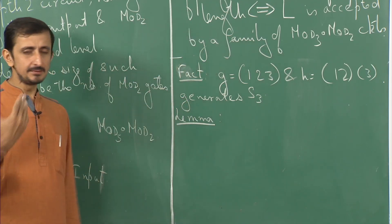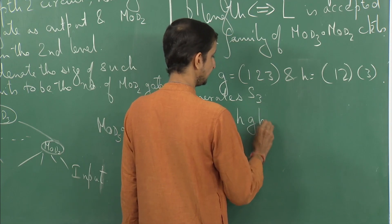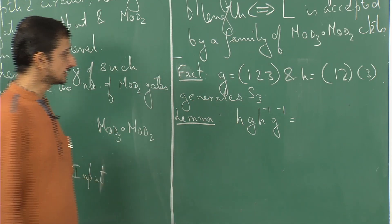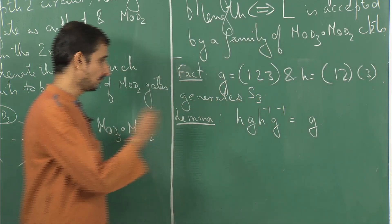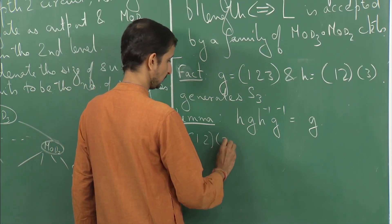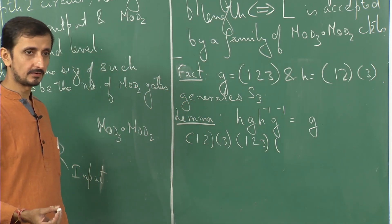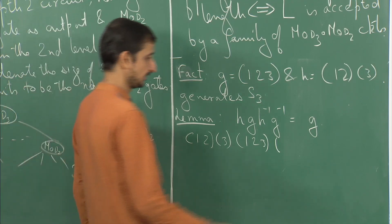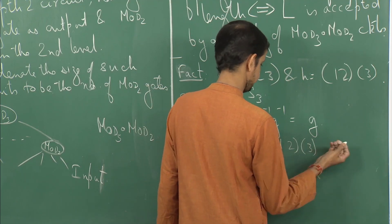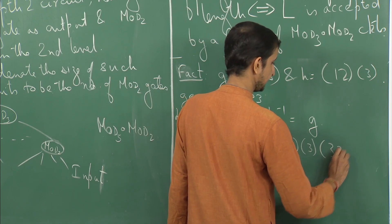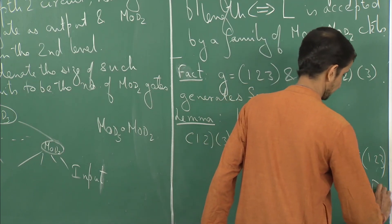We can say something similar to what we said last time. If we look at the commutator h·g·h⁻¹·g⁻¹, this turns out to be g. It is easy to check: h inverse is h itself because 1 maps to 2 and 2 maps back to 1, so h is its own inverse. And g inverse is basically (3,2,1). If you solve this, you get the cyclic permutation g again.